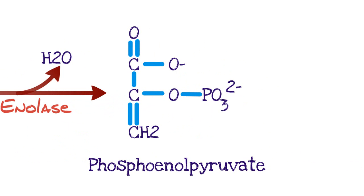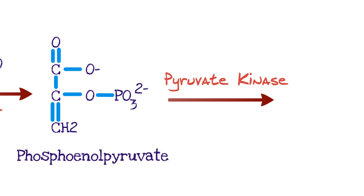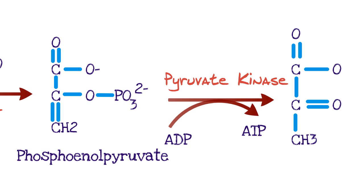Phosphoenolpyruvate is a very important molecule involved in the last step of glycolysis. Phosphoenolpyruvate is acted upon by pyruvate kinase — a kinase again, so we know a phosphate is going to be removed. Pyruvate kinase utilizes ADP: ADP comes in, takes a phosphate, becoming ATP — another energy-producing step. Pyruvate kinase converts phosphoenolpyruvate to pyruvate, the last molecule in glycolysis. Pyruvate goes on to the Krebs cycle, or if there's no oxygen present, goes on to form lactic acid.